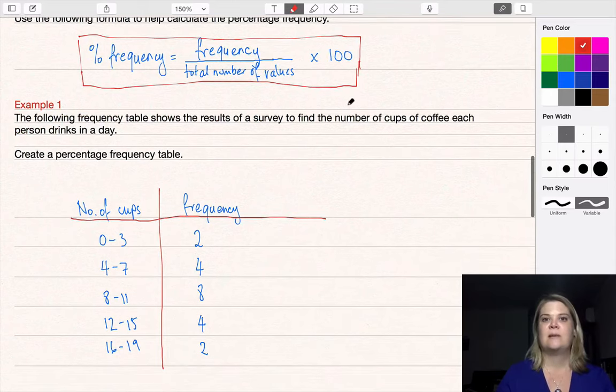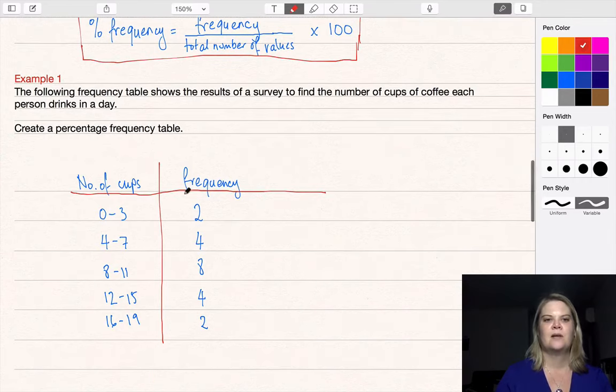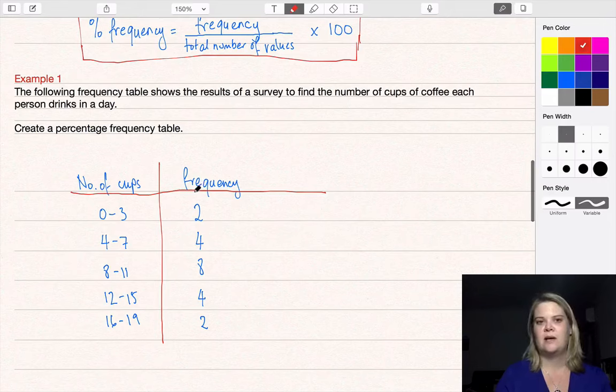Our example is the same from our previous video. The frequency table shows results of a survey to find the number of cups of coffee each person drinks in a day. We need to create a percentage frequency table from the frequency table we're given.